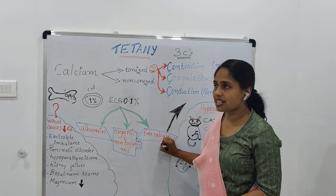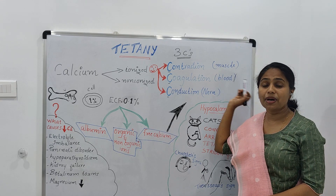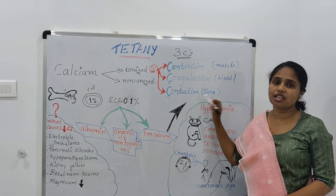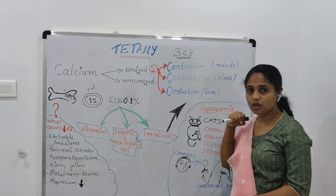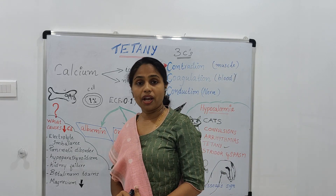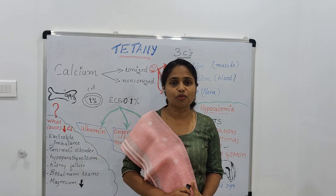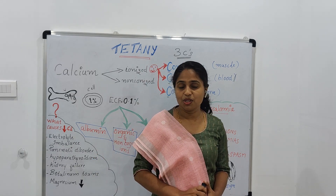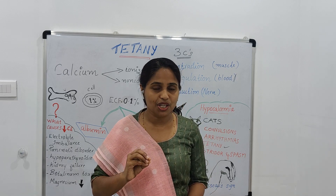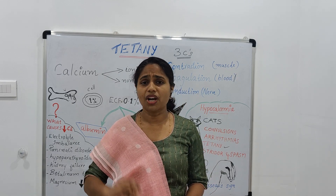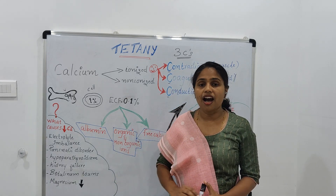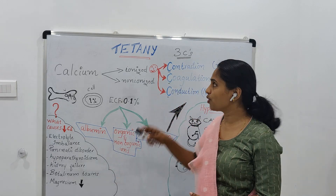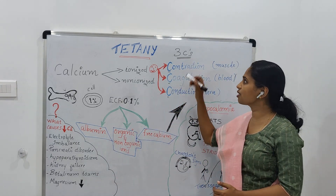Free ionized calcium is necessary for muscle contraction, blood coagulation, and nerve conduction — including coagulatory factor number 4 and nerve impulse transmission. These are the functions of free calcium. You can remember these as the 3 C's.